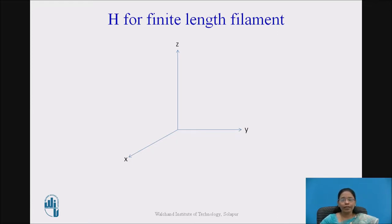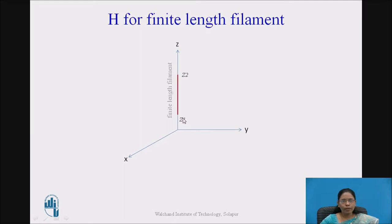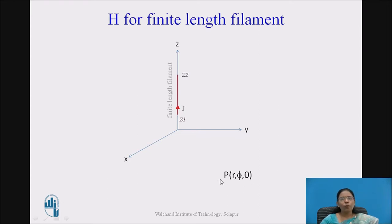Now, to find H-bar for a finite length filament, consider a finite length filament placed along the Z-axis in an XYZ coordinate system, ranging from Z1 to Z2. The current I is flowing through this finite length filament in the upward direction. Consider the point P placed in the Z equal to 0 plane with coordinates (R, phi, 0). Point P has a certain radius from the origin, lies on a phi-constant plane, and Z is 0.